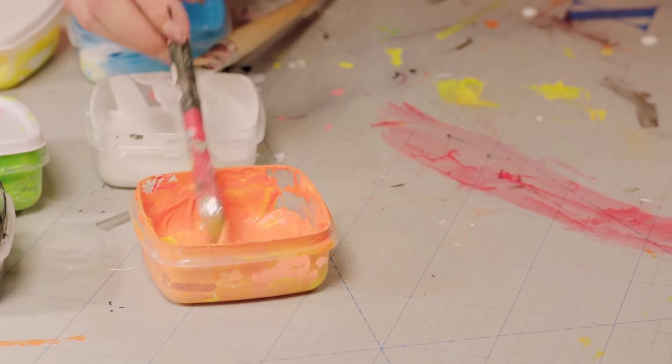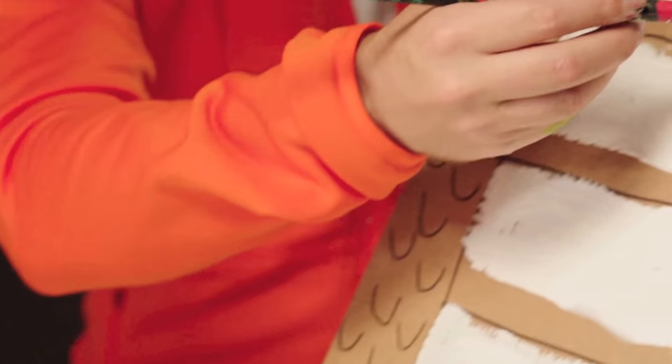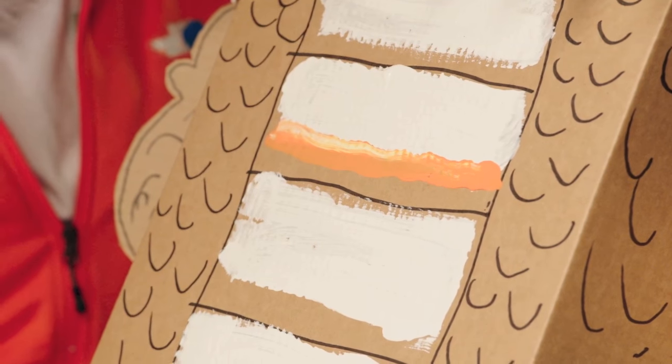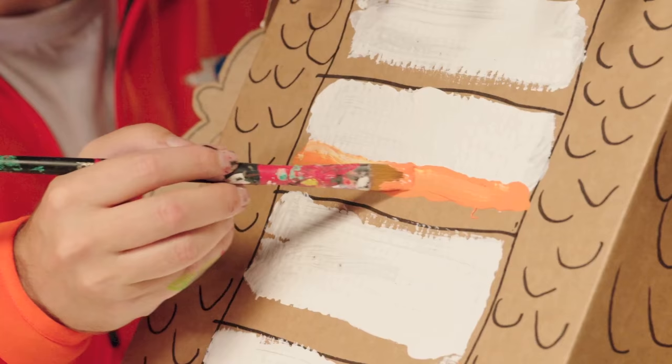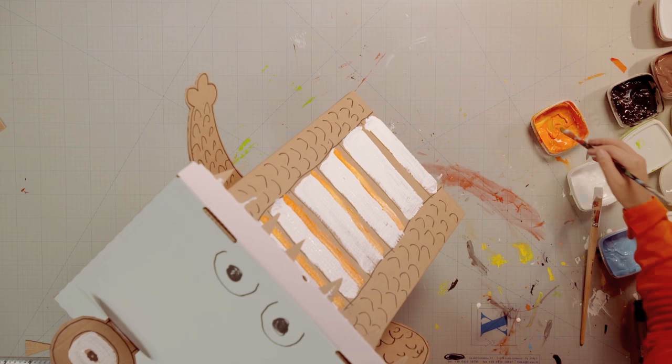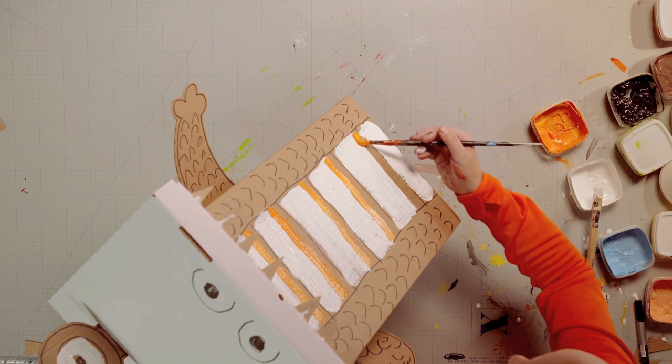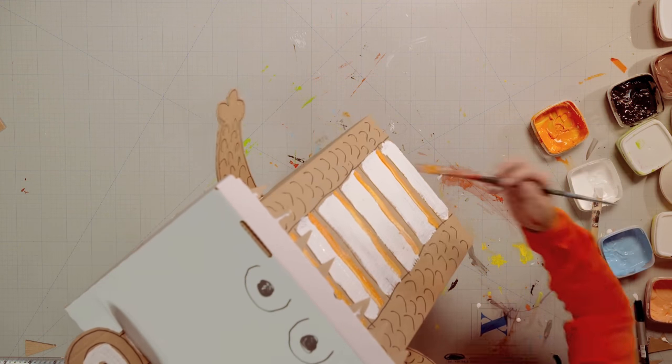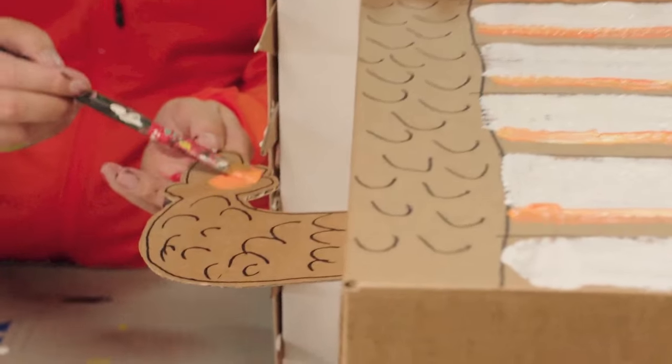Orange goes really well with the brown cardboard color. So I'm painting a small orange stripe below each of the white stripes. Paint a little bit more orange on his hands.